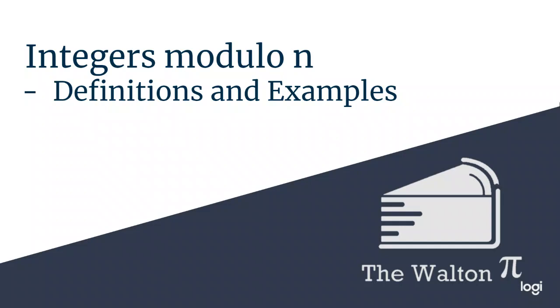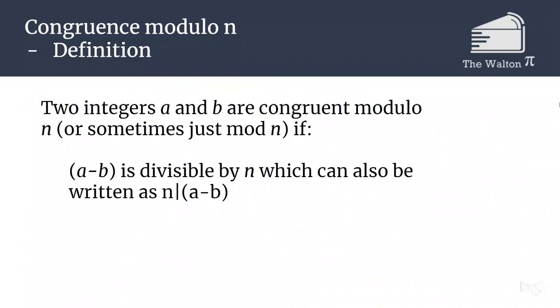To start off, we need to establish what it means for something to be congruent mod n. Two integers a and b are congruent modulo n if a minus b is divisible by n, or in other words, n divides the value a minus b.